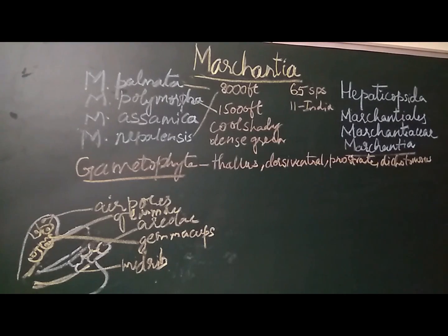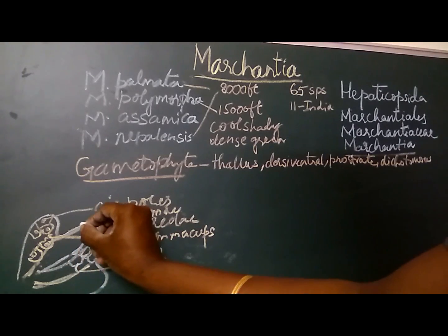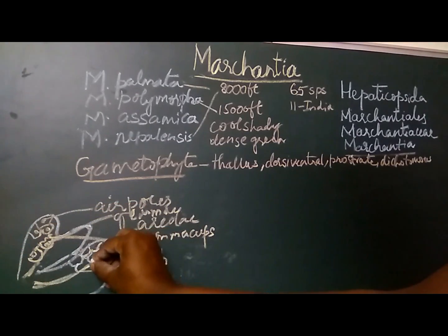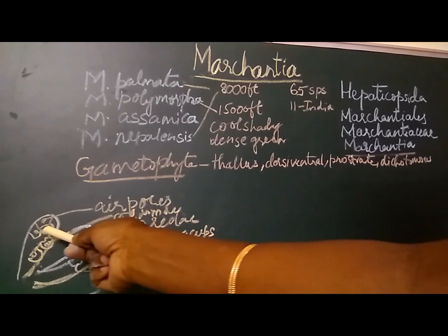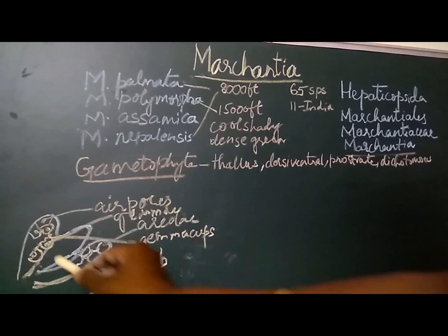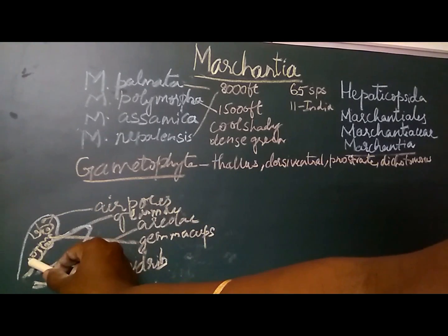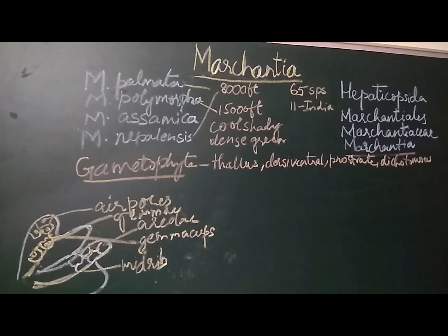On the dorsal surface, the thallus is dark green, has a prominent midrib, and shows the presence of rhomboidal areas called aeroli. In the center of each aeroli is an air pore, which helps in the exchange of gases. On the dorsal side, there are small crescent-shaped or cup-like shallow structures called gemma cups. Inside the gemma cups are the gemmae, which help in vegetative propagation.